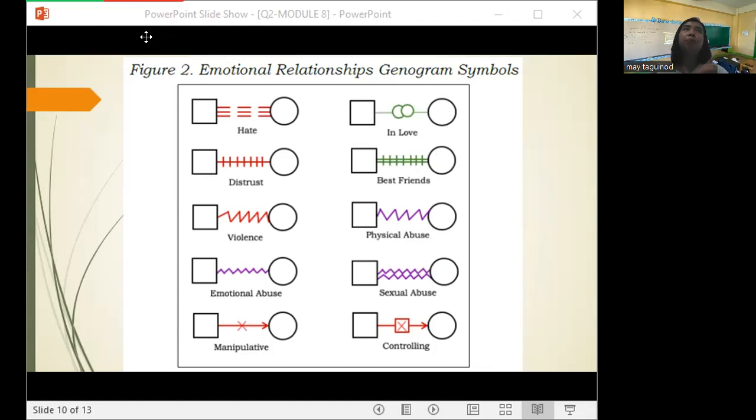For in love, there is a line at the center. Then for best friends, we have two vertical lines and two horizontal lines and vertical lines at the center. For physical abuse, may pagkakaiba ang zigzag pattern nila compared to violence. For sexual abuse, we have two small zigzag lines. And for controlling, we have an arrow and then a square at the center and cross mark inside the square.